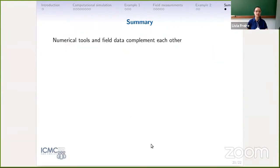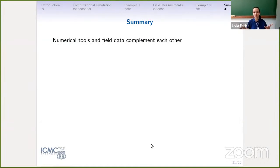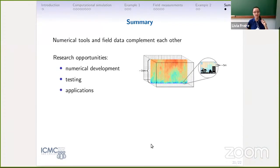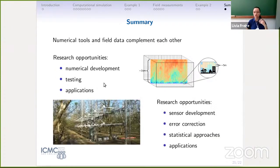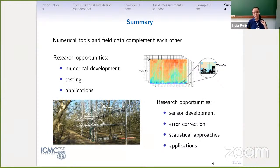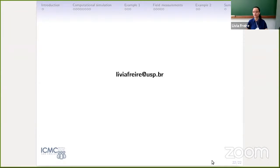To summarize: numerical tools and data complement each other. Sometimes we can work on them together to look at the same problem. There are many research opportunities today in better numerical development and testing of current models for different conditions and applications. For field data, there are research opportunities in sensor development, study of sensor errors, better statistical approaches when interpreting turbulence data, and applications. Thank you for your attention and for having me. If you have any questions, feel free to ask.